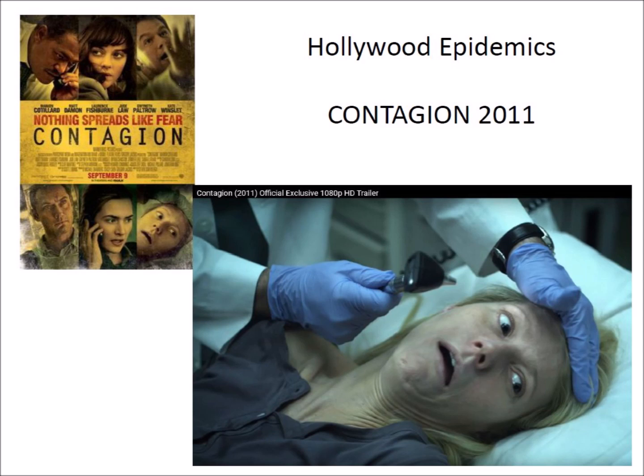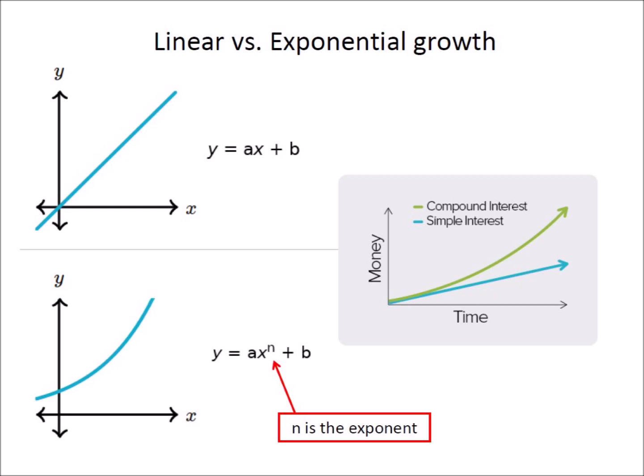Pandemics are characterized by exponential growth. Linear functions are straight lines typically expressed as y equals ax plus b, where a and b are constants. Exponential functions are graphed as curved lines that constantly increase, with an exponent n that determines the rate of growth. Simple interest paid by a bank is an example of a linear function, whereas compound interest is an exponential function.